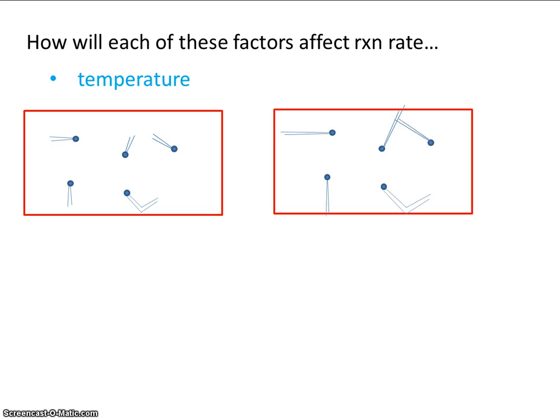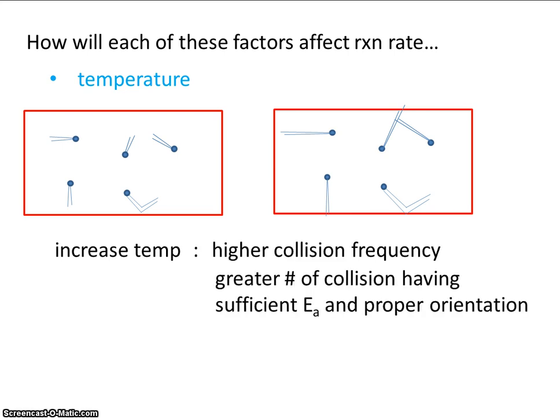That's why I've drawn the whooshies to be longer. So if these molecules are moving faster, it's simply more likely that they'll collide more often and that they'll have more energy. So higher collision frequency and a greater number of collisions having sufficient Ea and proper orientation.